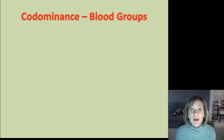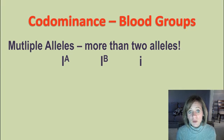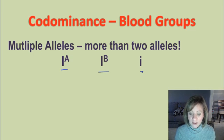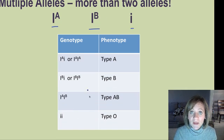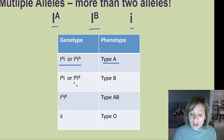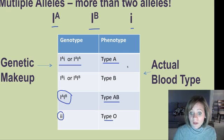Another example of codominance is displayed by human blood groups, also called multiple alleles because there are actually three alleles: big I^A, big I^B, and little i. You always have only two of those alleles in your genotype, but there are three possibilities. Please write and memorize this chart: type A blood can have genotypes I^A I^A or I^A i; type B can have I^B I^B or I^B i; type AB is only I^A I^B; and type O is only ii. The genotype is the genetic makeup, and the blood type is the phenotype.